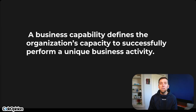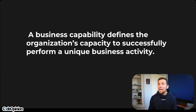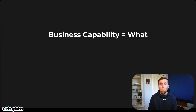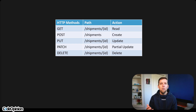Rather, focus on what your system actually does. What are the capabilities? A business capability defines the organization's capacity to successfully perform a unique business activity. It's the what — what does your system actually do? Using my example of a shipment of a package, how does that actually work with CRUD?